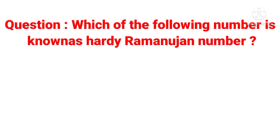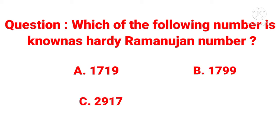Next question: Which number is known as the Hardy-Ramanujan number? Option A: 1719. Option B: 1799. Option C: 2917. Option D: 1729. The answer is 1729.